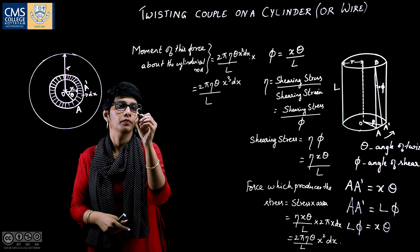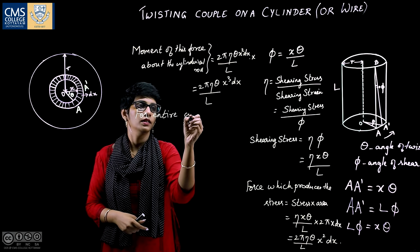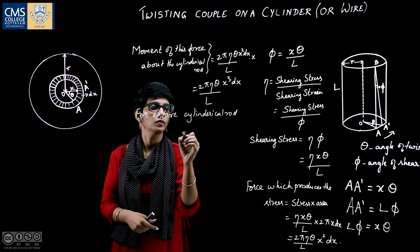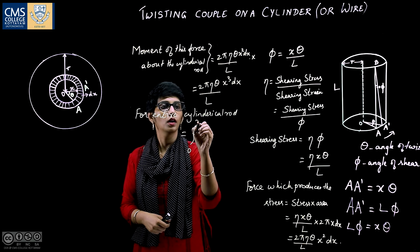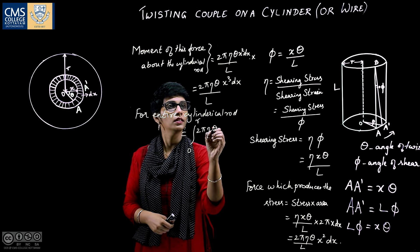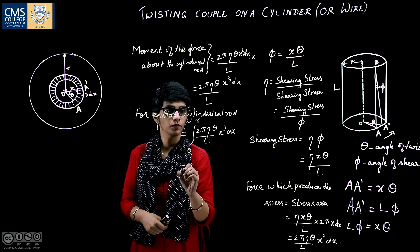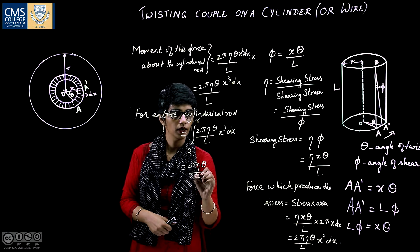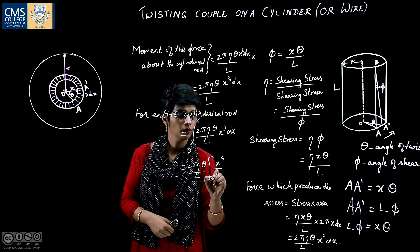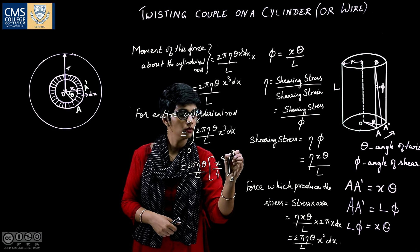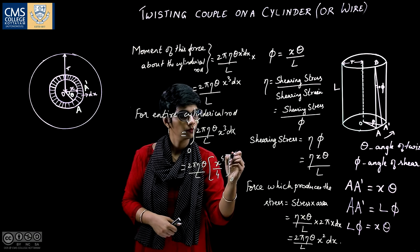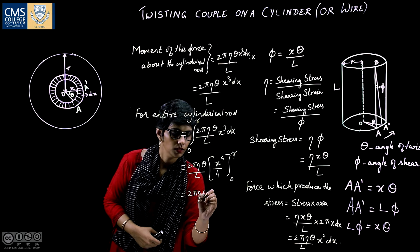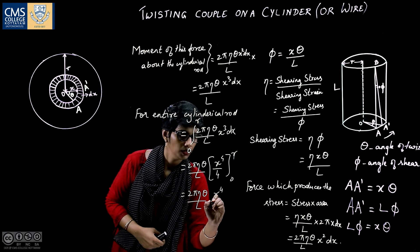For the entire cylinder, this is equal to integral 0 to R of 2 pi eta theta by L x cubed dx. This is equal to 2 pi eta theta by L, x raised to 4 by 4, 0 to R, which is 2 pi eta theta by L, r raised to 4 by 4.